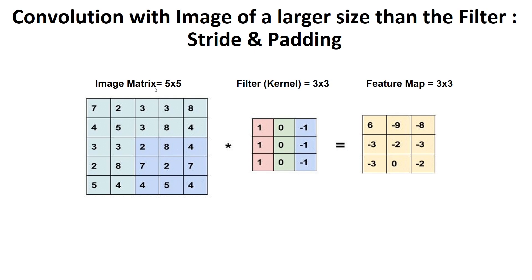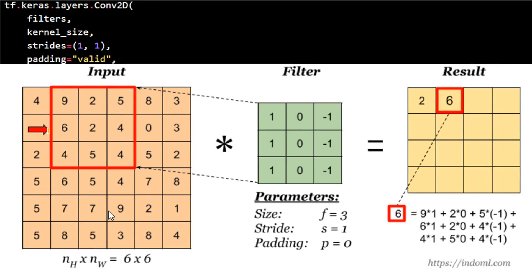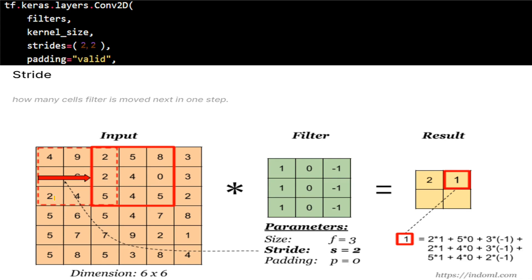When we use stride over a larger image matrix than the filter, the feature map will be less than the image matrix. Stride 1-1 means we are moving one column at a time and one row at a time. Stride 2 by 2 means two columns at a time.